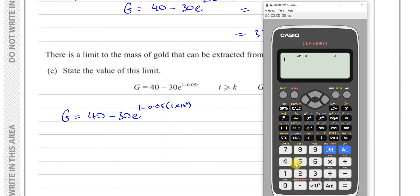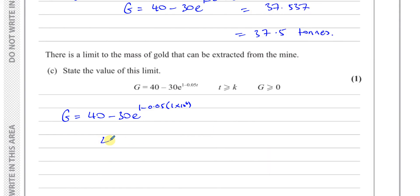So if we take, for example, this 40 minus 30 to the power of... I can just replace that 70 with a really big number. For example, 1 million. So if I do 1 times 10 to the power of 6, that's like a million. So if I push equals here, it should give me the limit that it can get to, which you can see is 40. So we can just state 40. The value of this limit is 40, so it's 40 tons.